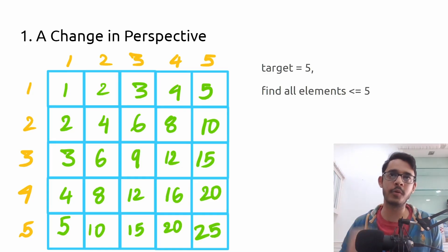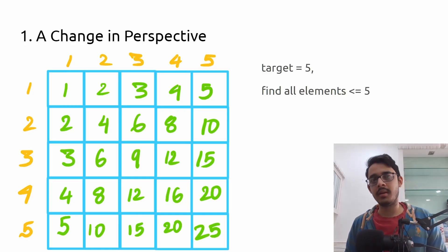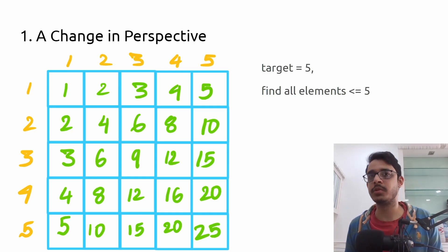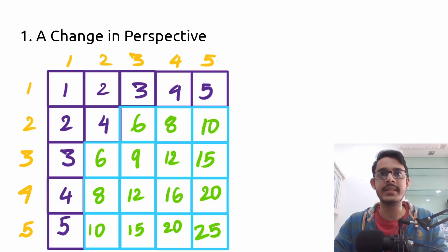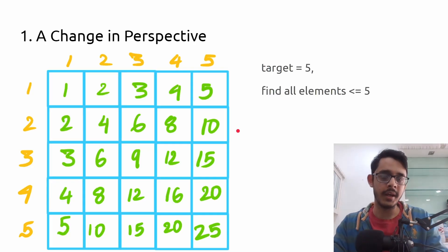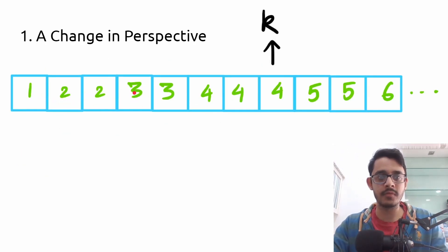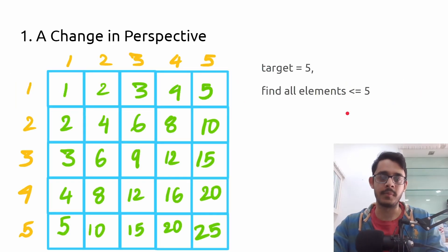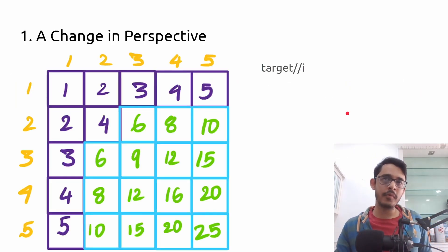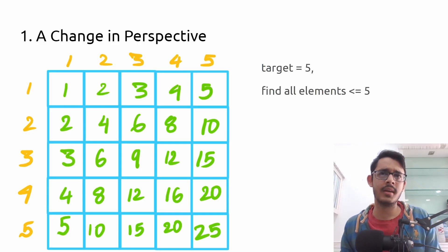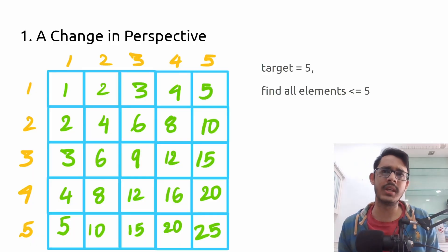Let's say the target element is 5. Can you tell me how many elements in the table are less than or equal to 5? Going through the grid, there are 10 total elements less than or equal to 5. So we want a better way to return the count of numbers less than or equal to a particular target without iterating over all m×n elements.